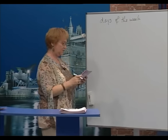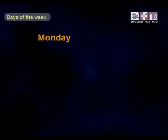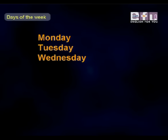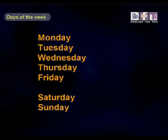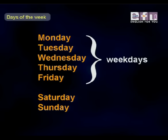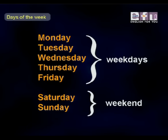There are seven days in one week. Here they are: Monday, Tuesday, Wednesday, Thursday, Friday, Saturday, and Sunday. Monday, Tuesday, Wednesday, Thursday, and Friday are weekdays. Saturday and Sunday are the weekend.